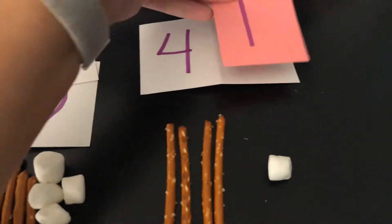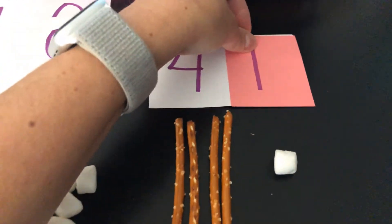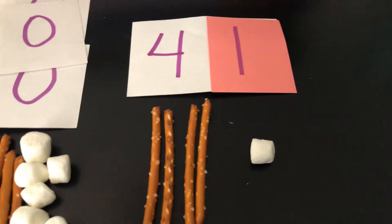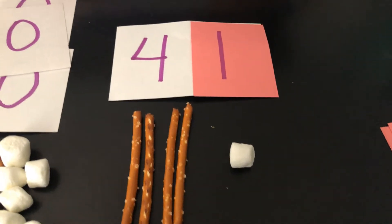And 4 tens is the same as 40. So, I take my secret code card for the decade number 40, just like that, and then my ones hasn't changed. So, now I have 41. So, 31 plus 10 equals 41.